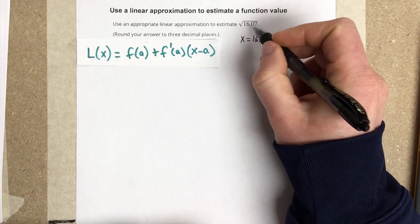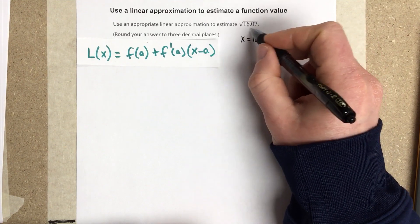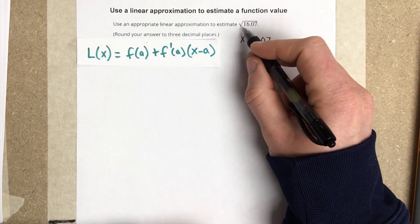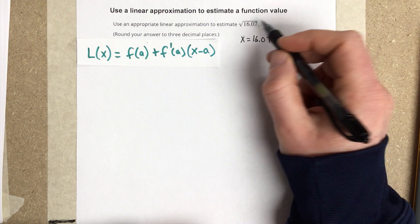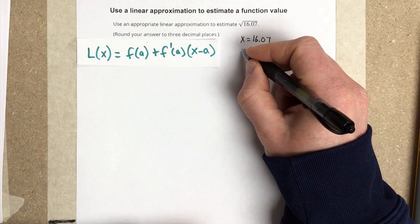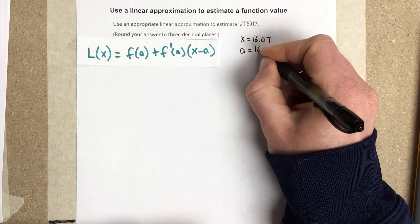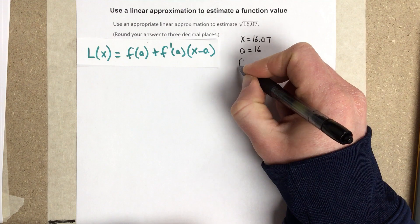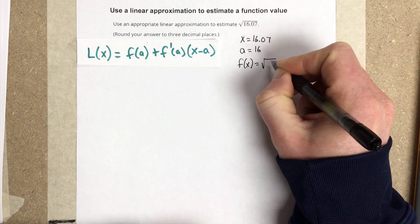So then I'm going to pick a function and an a value that will represent this and be close to the approximate number. Well, I know that root of 16 is 4, so I'm going to use 16 as my a value. So I'm going to say a is 16. It's really close to 16.07. And then that means my function is going to be root of x.